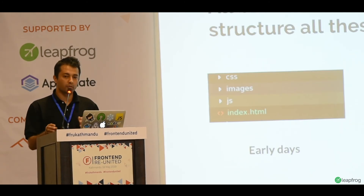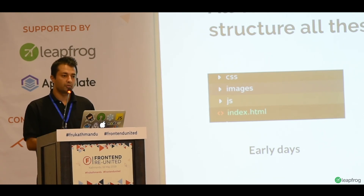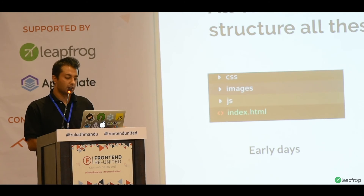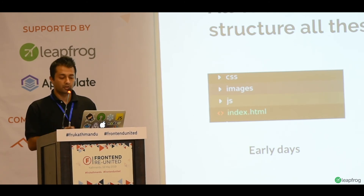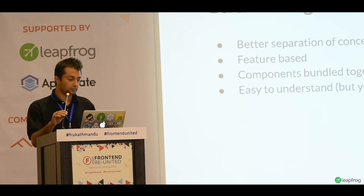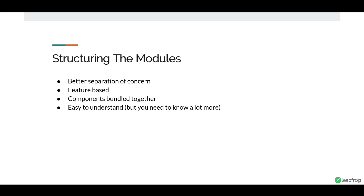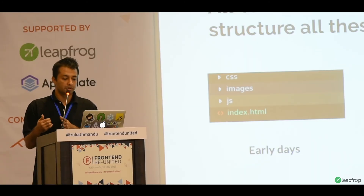We have seen components and different layers. To make manageable code, we need to manage the structure. Before, there used to be a simple front-end structure: JS, images, CSS, and index.html — with one big bulky JS file. But we can manage this in different formats: assets, components, service, states, views (for routes), config, and package. We structure modules based on separation of concerns. Components folder has lots of components, services folder has services, and feature-based components are built together. If a component is 'summary', then summary has its own HTML, its own CSS, and functionality.